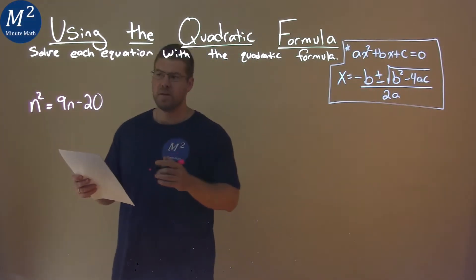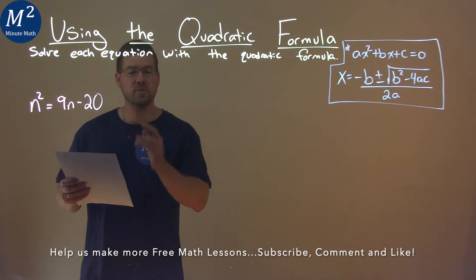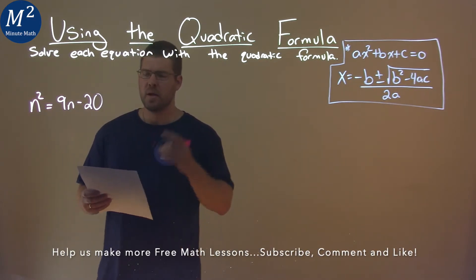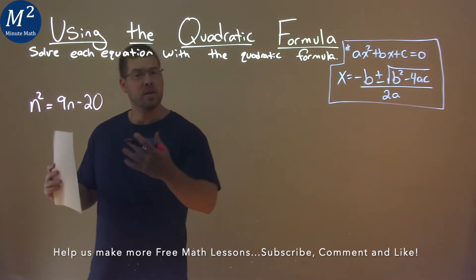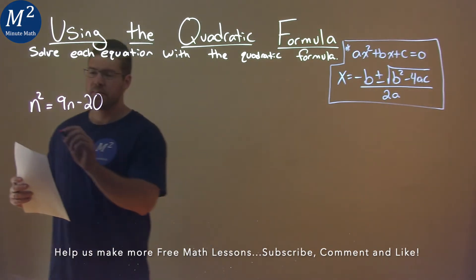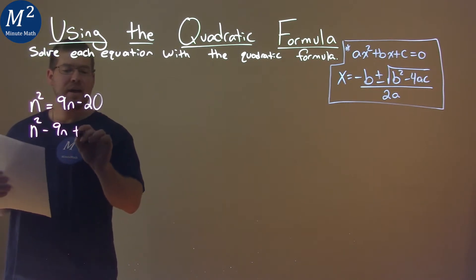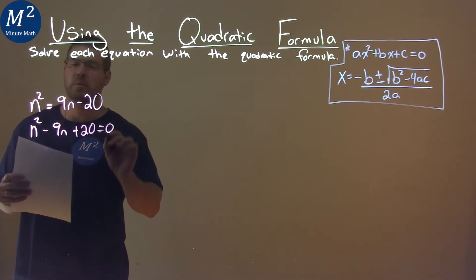We're given this problem right here: n squared equals 9n minus 20, and we need to solve this using the quadratic formula. First thing, I want to bring everything over to the left-hand side so it's equal to 0. n squared, then minus 9n to both sides, add 20, equals 0.